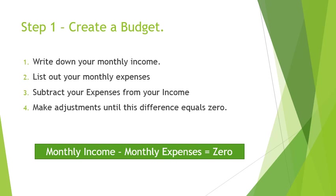First are the high-level steps. Step one: create a budget. The first step to creating a budget is you write down your monthly income. Then second, you list out your monthly expenses. Third, you subtract your expenses from your income. And then you make adjustments until your difference is zero. The definition of a balanced budget is: monthly income minus monthly expenses equals zero. When we get into the example section, you'll have a better understanding of what this means.